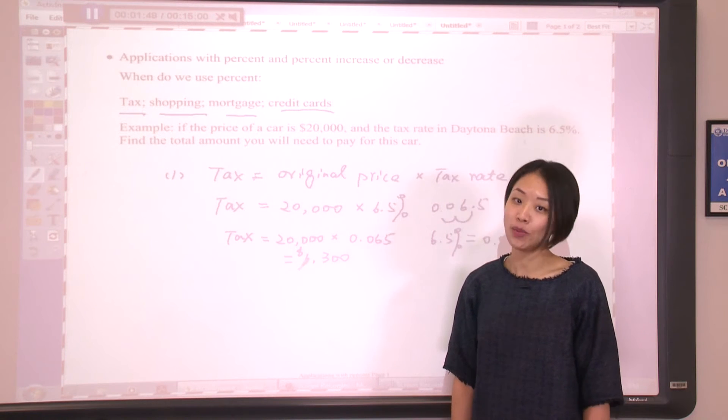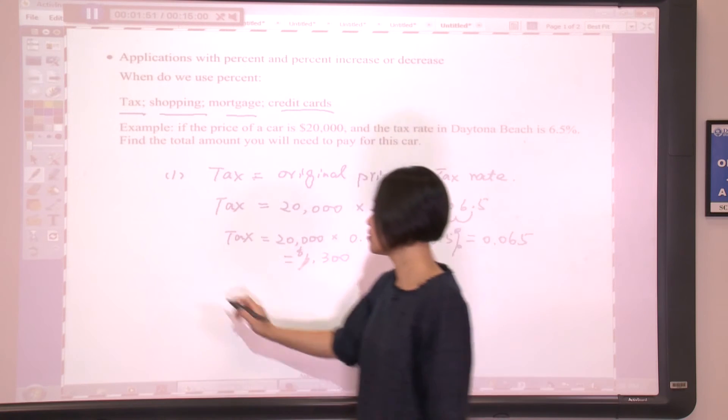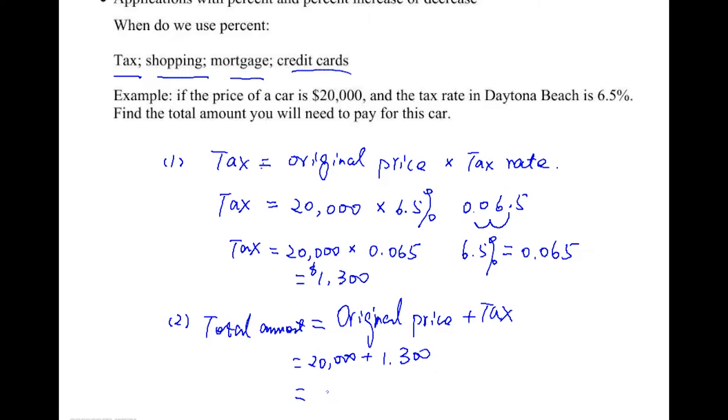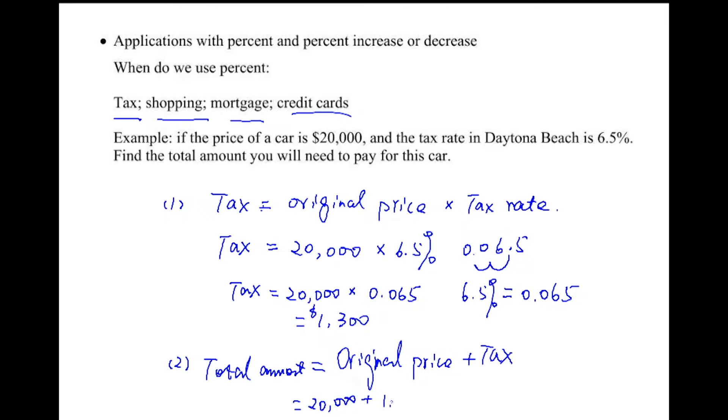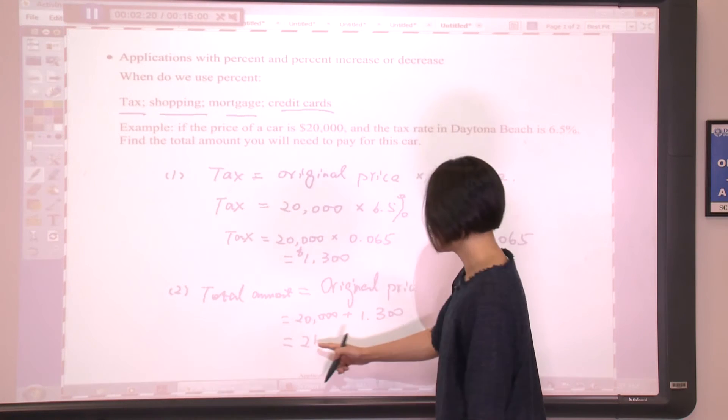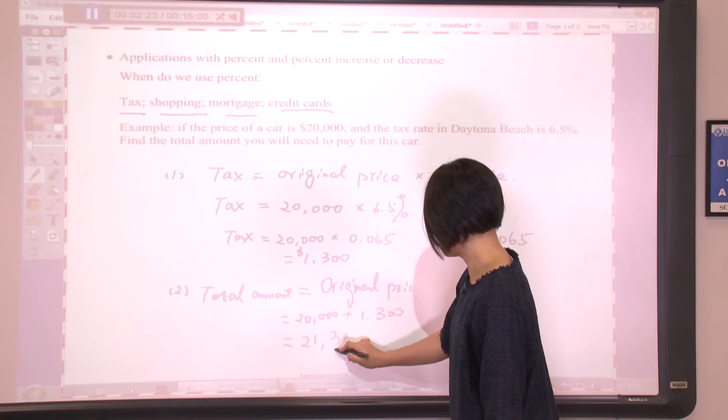Next, we need to calculate how much you need to pay for this car. The total amount you need to pay equals the original price of this car plus the tax. That is $20,000 plus $1,300. So the final amount you need to pay would be $21,300.